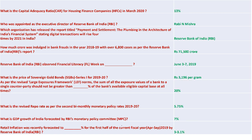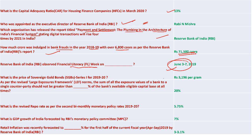The Capital Adequacy Ratio for housing finance companies in March 2020 is 13%. Rabbi and Mishra was appointed as Executive Director of RBI. RBI released the report 'Payment and Settlement: The Plumbing in the Architecture of the Indian Financial System.' 71,500 crore was involved in bank fraud in 2018-19 covering over 6,800 cases as per the RBI report. RBI observed Finance Literacy Week from June 3 to 7th. The Sovereign Gold Bond series number is 3196.